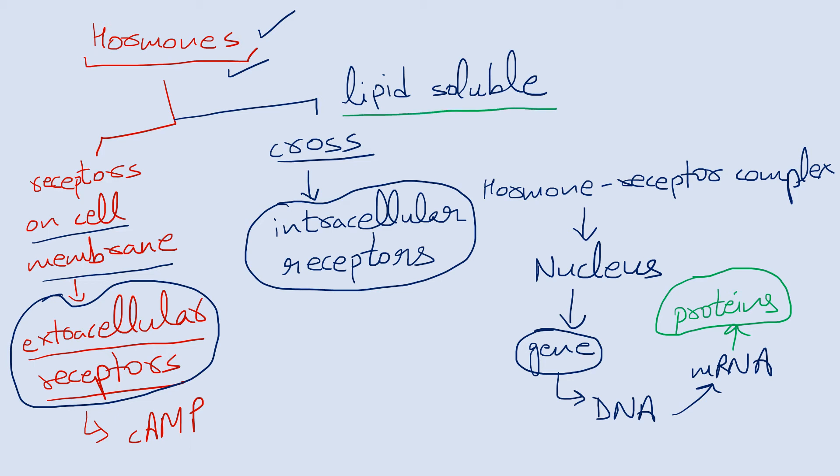These proteins are the ones which will bring about changes in tissues. They might cause differentiation or growth and developmental effects. So this lipid-soluble hormone has gone right into the nucleus and interacted with the genome to bring about specific desired changes.